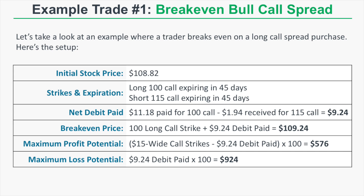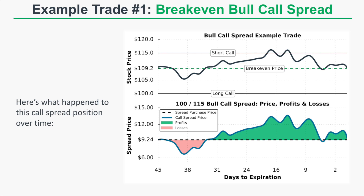Looking at the chart, the top portion shows the long call strike, short call strike, break-even price, and the stock price in relation to those levels. The bottom portion shows the price of the 100/115 long call spread. The stock price initially fell slightly and the spread's value also fell, then the stock price rallied above the short call strike. At one point the spread was entirely in the money, and the spread's price reached a high of $13.50, meaning the profit on the spread was just over $4.00 at that point.